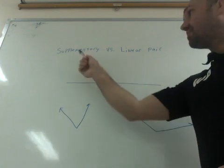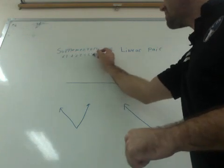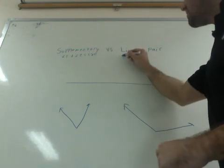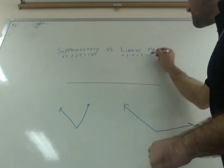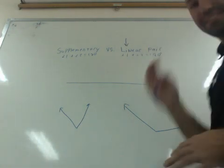So, if something's supplementary, then two angles, angle 1 plus angle 2, is going to add up to 180 degrees. A linear pair, the same thing, they have to add up to 180 degrees, but they have to be on the same line.